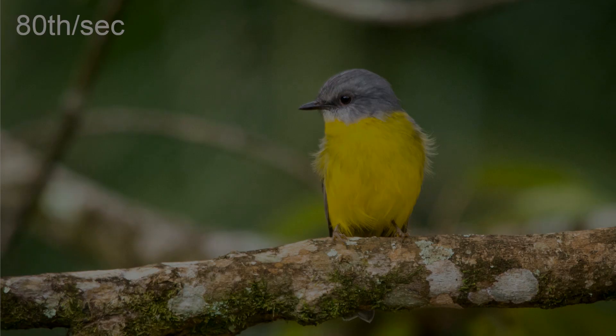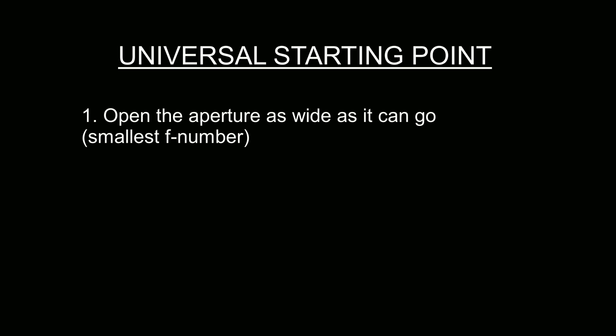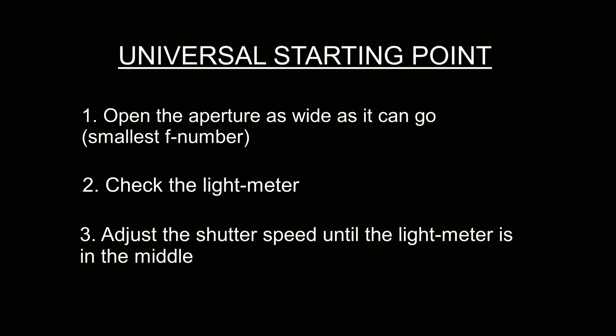It's time to explain the Universal Starting Point — my quick and simple method for finding, in manual mode, the fastest shutter speed available on any camera, any lens, and in any light. Step 1: open the aperture as wide as it can go. That can vary from lens to lens, so it might be f2.8, f3.5, f4 — whatever is the smallest f-stop number for that lens. Step 2: check your light meter. Remember, it can switch itself off to conserve battery power, so you might need to half-press the button to wake it up. Step 3: adjust the shutter speed until the light meter is in the middle. It really is that simple — the process is incredibly easy to put into practice.